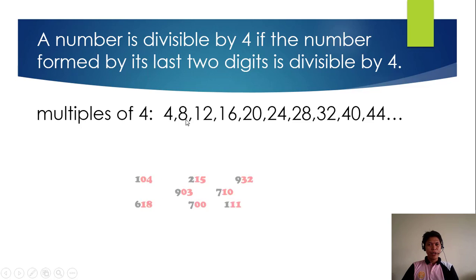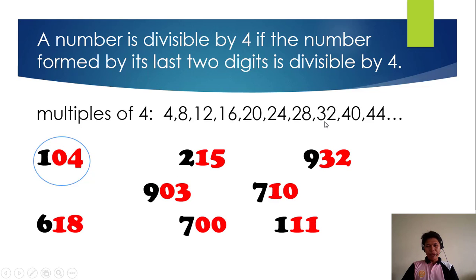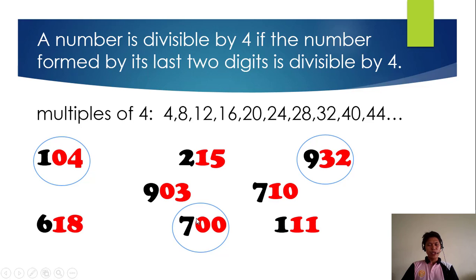Let's take a look at the multiples of 4: 4, 8, 12, 16, 20, 24, 28, 32, 40, 44, and so on. The last two digits of the given numbers form: 4, 15, 32, 3, 10, 18, 0, and 11. Let's discuss one by one. 104: 4 is a multiple of 4, therefore it is divisible by 4. 15 is not. 932: 32 is a multiple of 4, so this is divisible by 4. 3 is not. 10 is not. 18 is not. But 0 is divisible by any number, therefore 700 is divisible by 4. And 11 is not. So there are only three numbers divisible by 4: 104, 932, and 700.